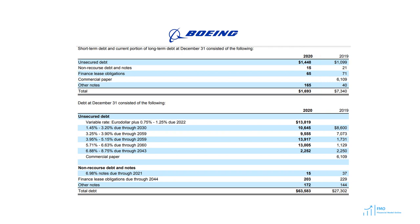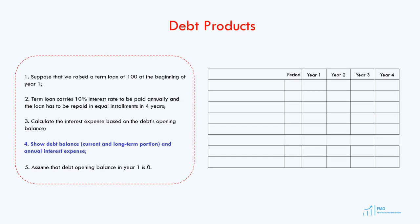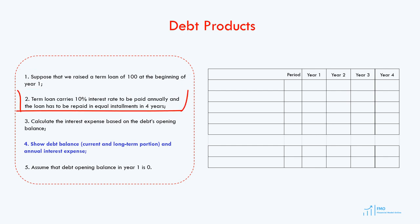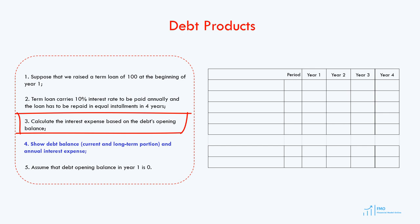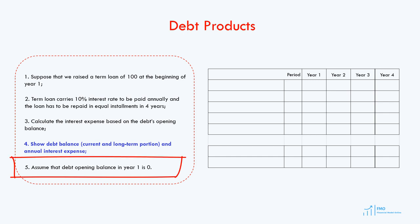Having been introduced to debt products, let's now review the accounting for debt, debt repayment, and interest expense. The treatment of debt under both US GAAP and IFRS are somewhat similar. Suppose we raise a term loan of 100 at the beginning of year 1, carrying a 10% interest rate paid annually. The loan is repaid in 4 years in equal installments, so every year we repay 25% of the loan. The interest expense of 10% is calculated based on the loan's opening balance. We need to show the debt balance and interest expense, divided into current and long-term portions, assuming the debt's opening balance is 0 in year 1.